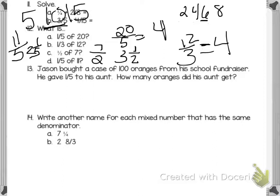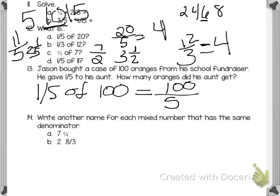Number 13. Jason bought a case of 100 oranges from his school fundraiser. He gave his aunt one fifth. How many oranges did his aunt get? So just like above, what is one fifth of 100? I'm going to even write that. One fifth of 100, which is the same as 100 over 5. And we just divide. 5 goes into 10 twice. You have nothing over and then a zero, so 20. And you could even count by 20s: 20, 40, 60, 80, 100 equals 5. So he gave his aunt 20 oranges.